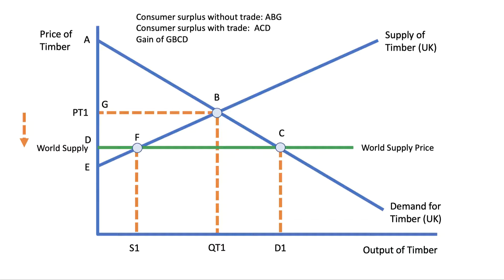What about producers? Producers without trade, selling at PT1, would have had producer surplus of GBE. With trade bringing down their pricing power, they can only produce S1 at the world price, giving a producer surplus of DFE. The area GDFB has been transferred from producers to consumers — a welfare transfer because timber has become less expensive.